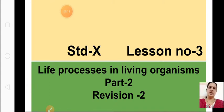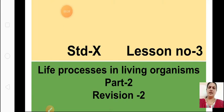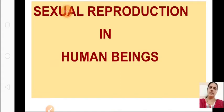We have finished revising the asexual reproduction of unicellular organisms, asexual reproduction of multicellular organisms, as well as sexual reproduction in plants. Now let us revise the next part of the lesson. Today we are going to revise sexual reproduction in human beings. Let us start with the male and female reproductive organs.